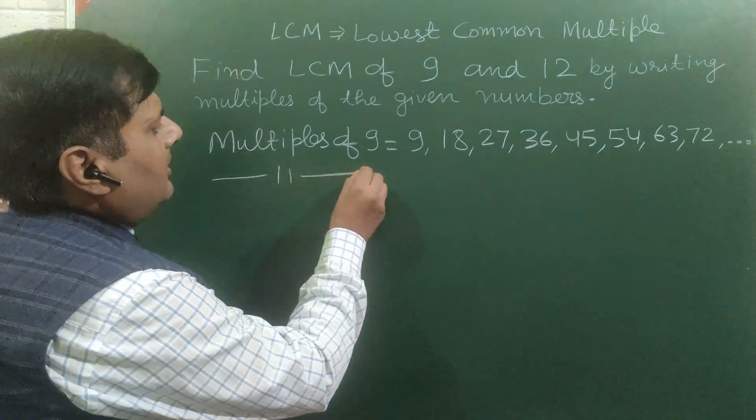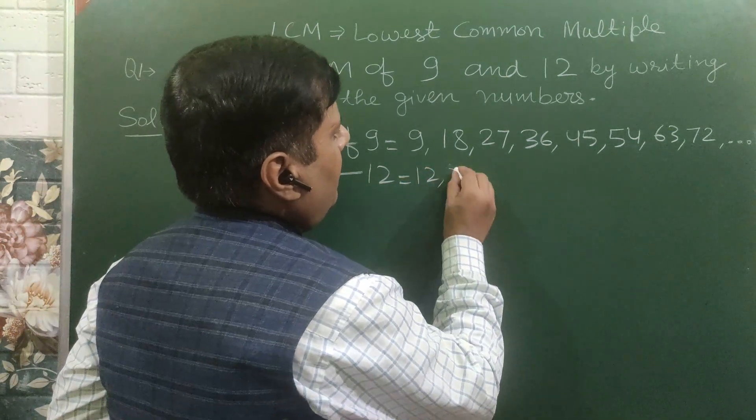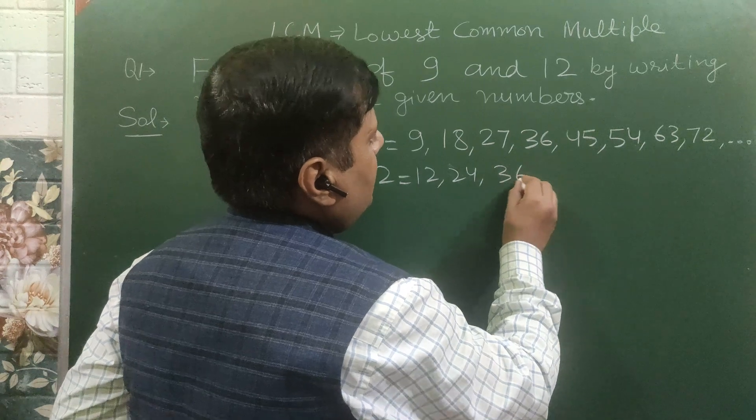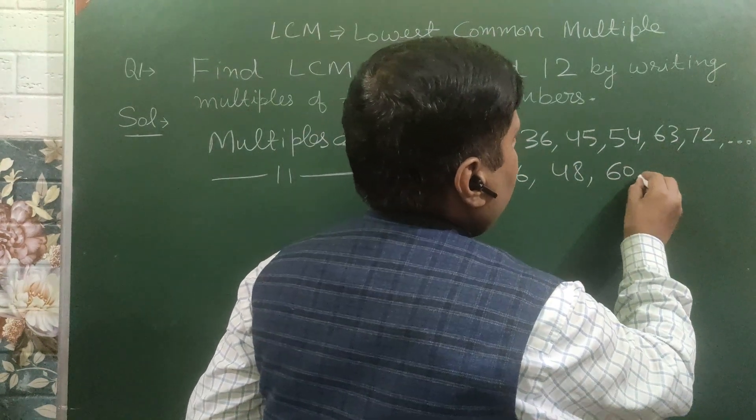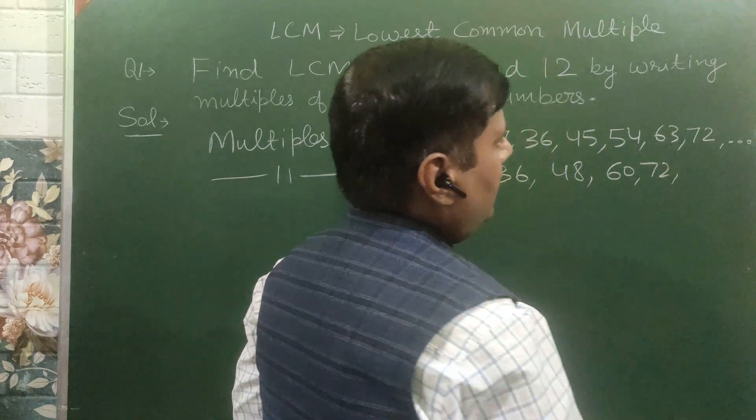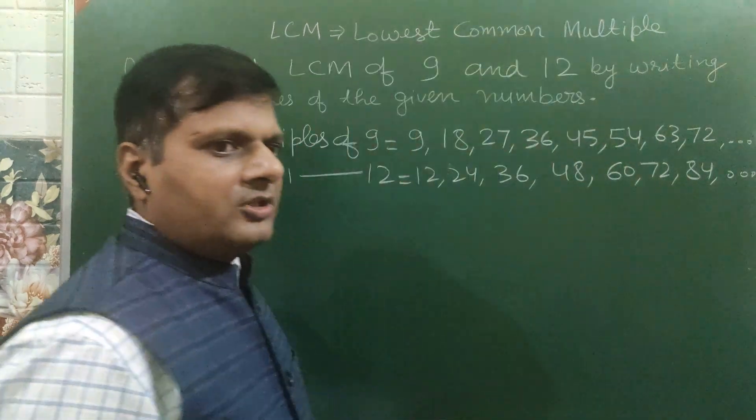Now we will write multiples of 12: 12 ones are 12, 12 twos are 24, 12 threes are 36, 12 fours are 48, 12 fives are 60, 12 sixes are 72, 12 sevens are 84 and so on.